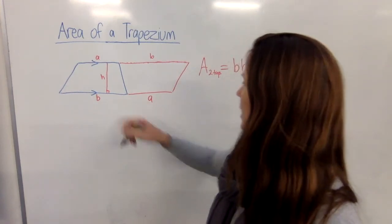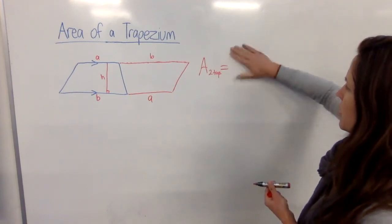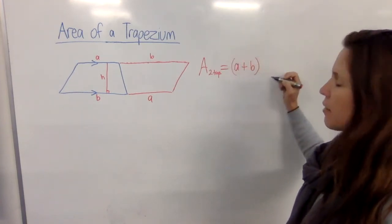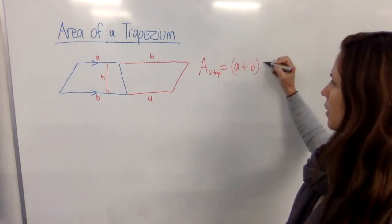Now what is the base? Well, the base is A plus B, so let's put that in instead of B. We've got A plus B and we have to multiply that by the height.